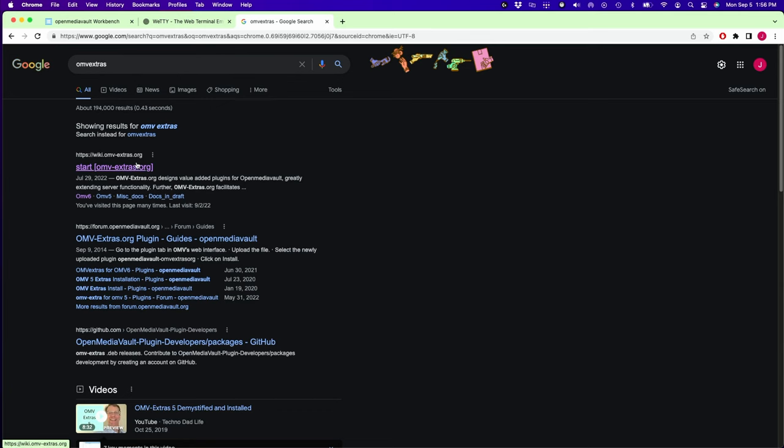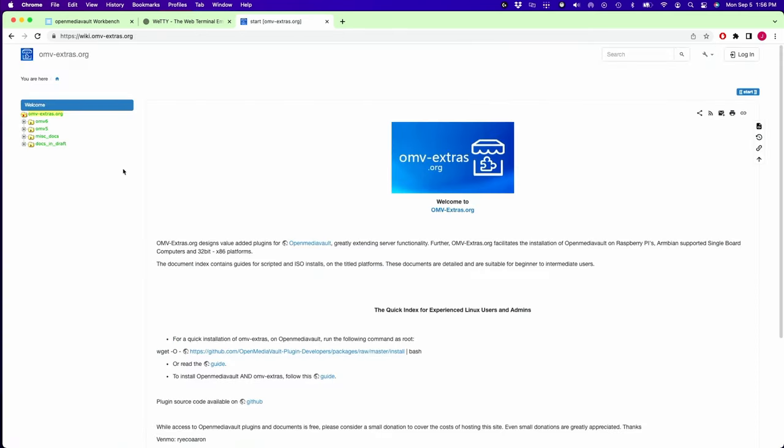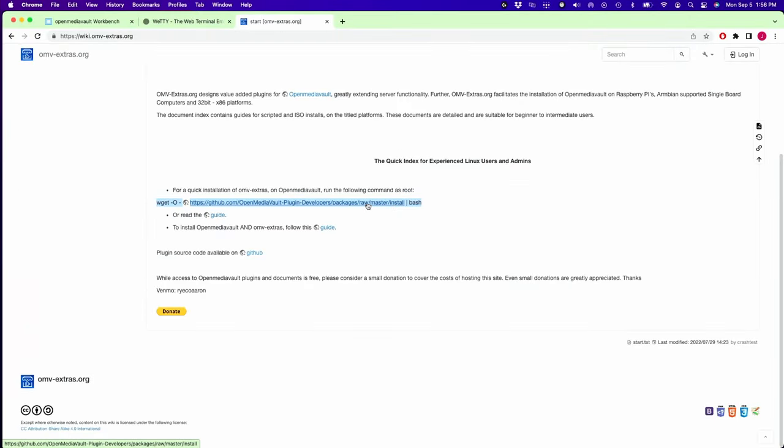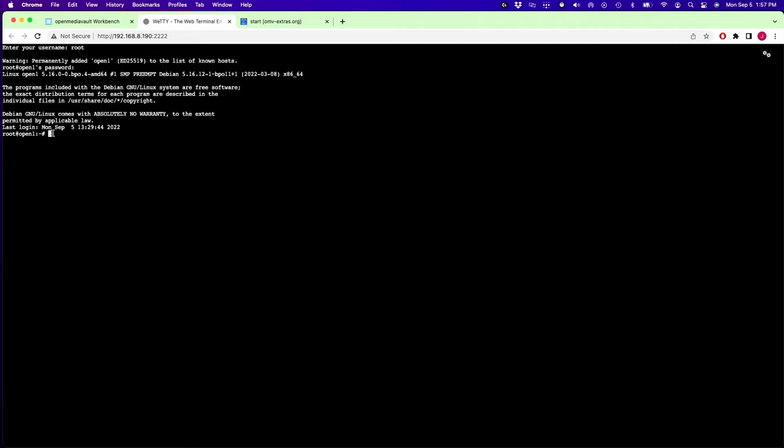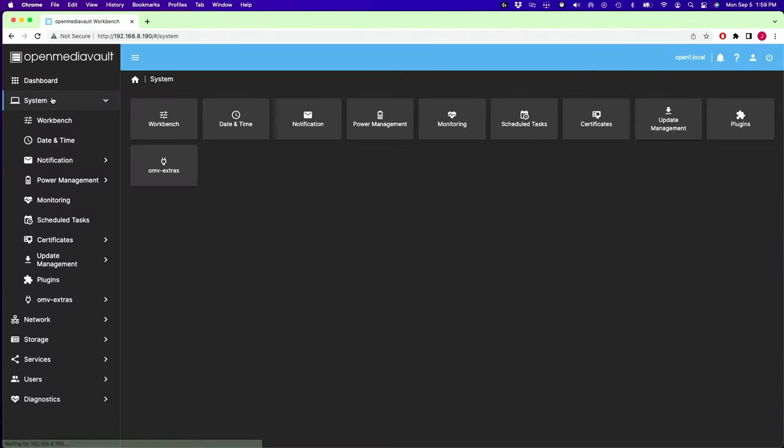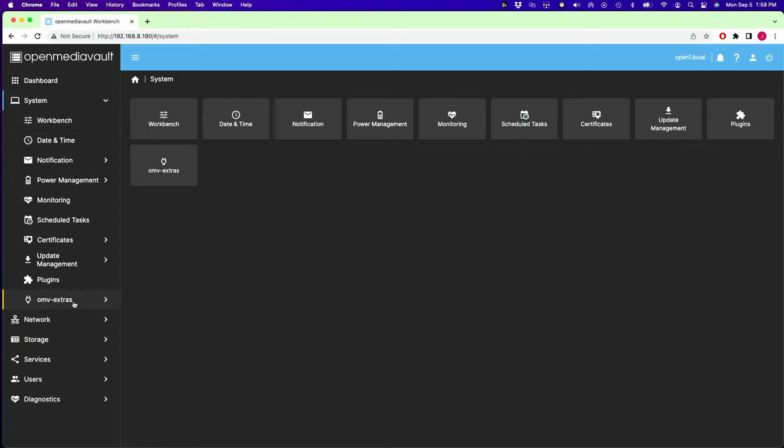We're going to search for OMV Extras. Type, go to OMV Extras. Scroll down. And so we're going to copy this line. And this will install OMV Extras. Go back to Wetty. Log in as root and your password. Hit enter. And then paste that line. And then hit enter. And that's going to install the OpenMediaVault Extras with the extra plugins. We can close that. Go back up to system. Now we have OpenMedia Extras.